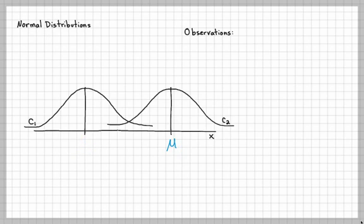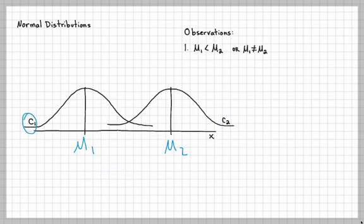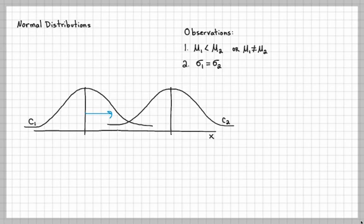Looking at our observations: mu one is less than mu two, and mu one does not equal mu two — that's true. Also, the spreads of curve one and curve two appear to be the same.